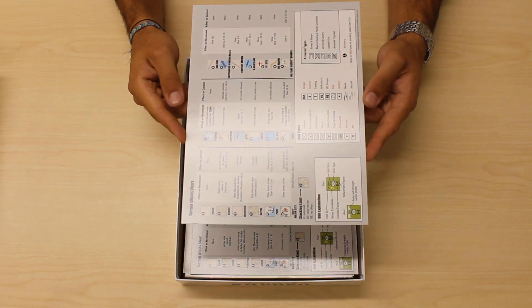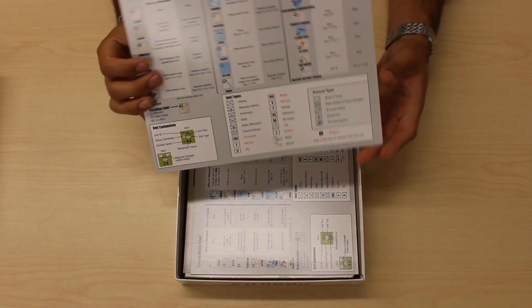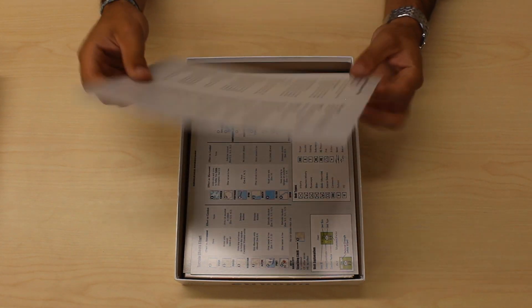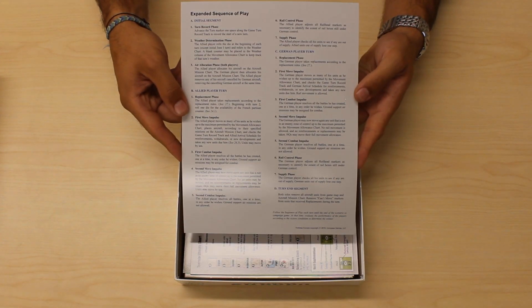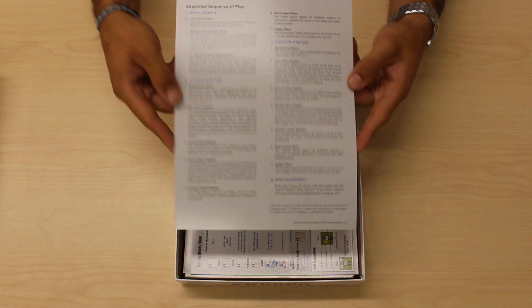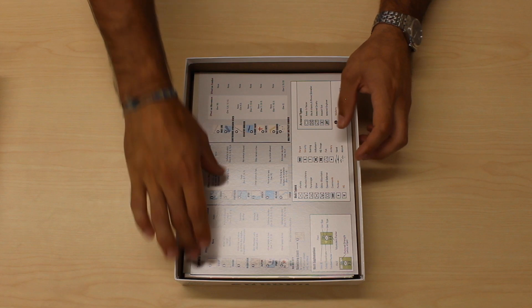Two player aid cards total. They are two-sided and include the terrain effects chart as well as the expanded sequence of play. We have two of those, one for each player.